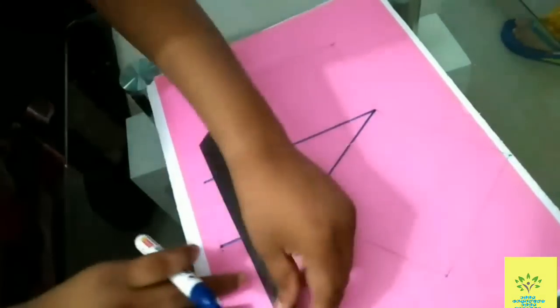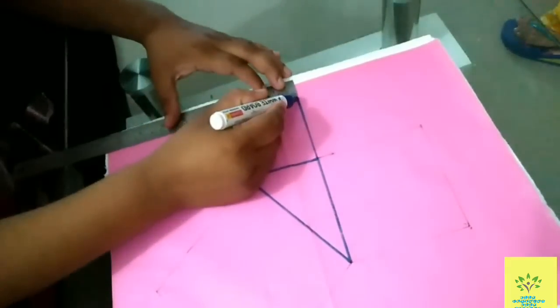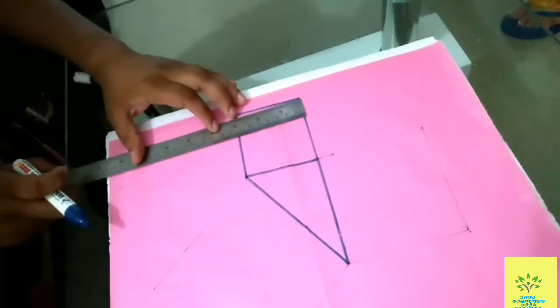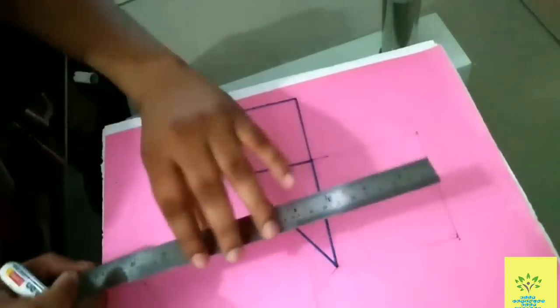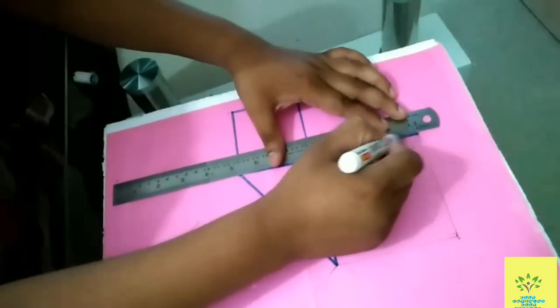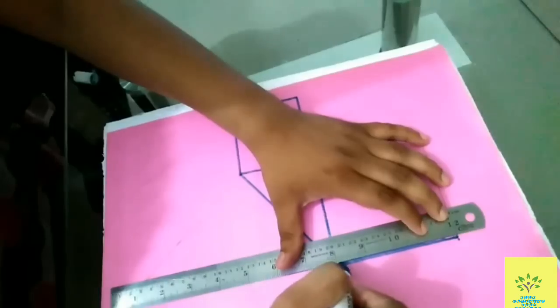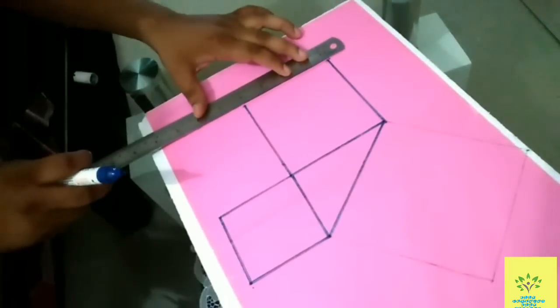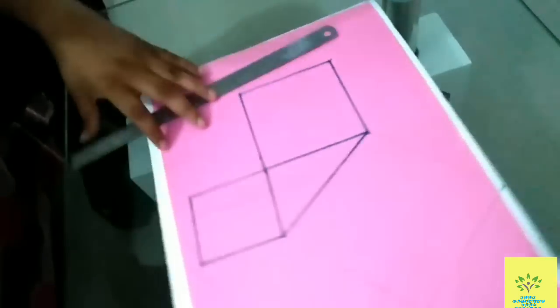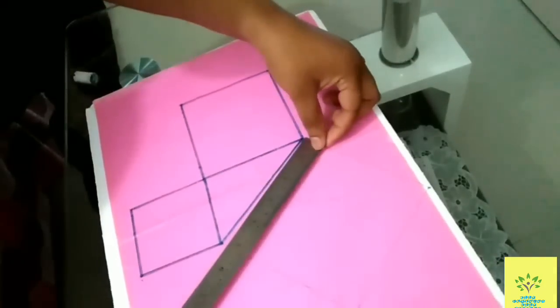Now we will draw squares: the base is 3 inches, so a 3×3 square, then the altitude is 4 inches, so a 4×4 square, and at last we will draw a square from the